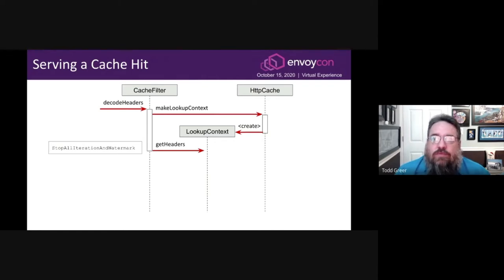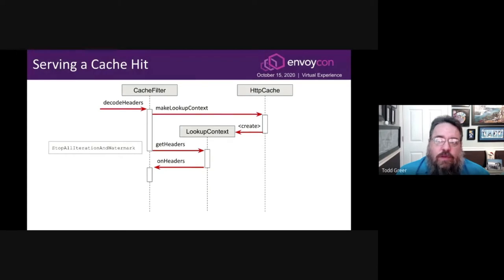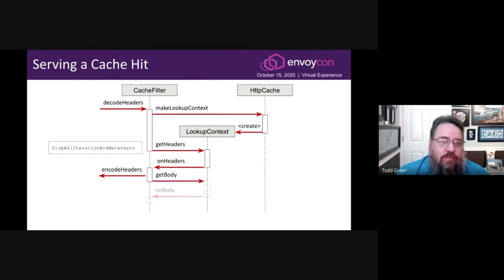When the cache plugin completes the lookup, it invokes our callback with the results. In the case of a hit, those results will include the cached response's headers, which we pass on to filter manager by calling encode headers. This tells Envoy to send those response headers to the client. If the results indicate that the cached response has a body, we then make one or more asynchronous get body requests to retrieve it, calling encode data to send each chunk of data to the client. At the end of this process, the entire response will have been streamed to the client from the cache.